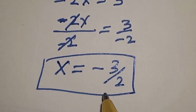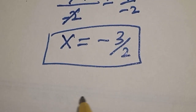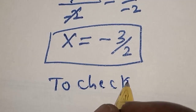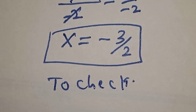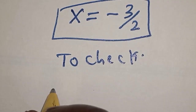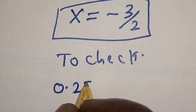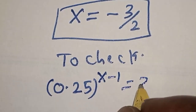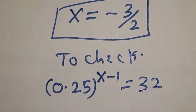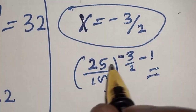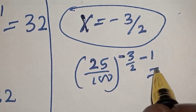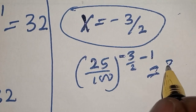Let's check to confirm if our answer is right or wrong. We have 0.25 raised to power s minus 1 is equal to 32, at s equal to minus 3 over 2. Then 25 over 100 raised to power minus 3 over 2 minus 1. This should be equal to 32.